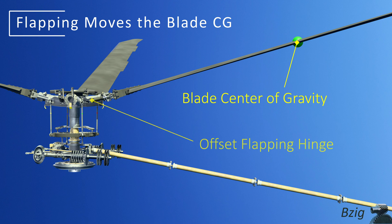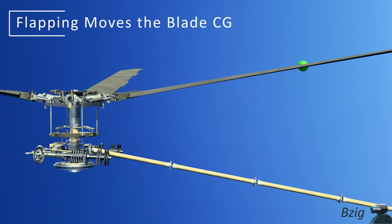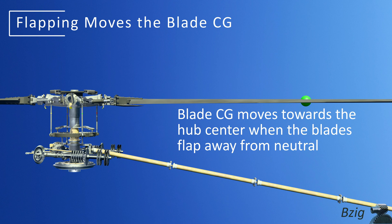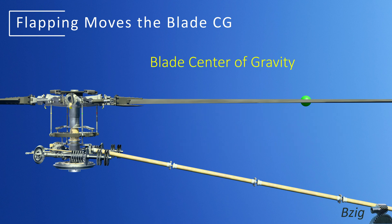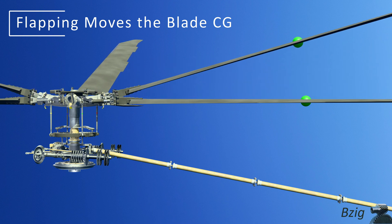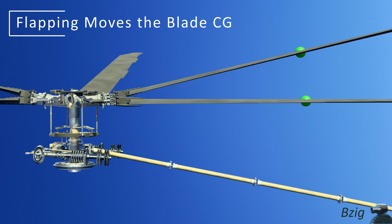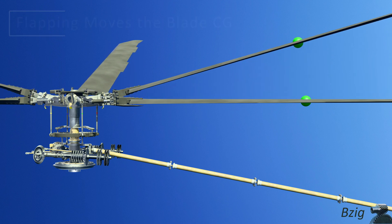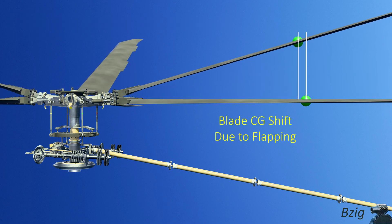But when flapping occurs, the blade's center of gravity moves radially towards and away from the center of rotation. When flapping is neutral, the blade is perpendicular to the mast and the center of gravity is at its farthest point from the center of rotation. And when the blade is at its maximum or minimum flapping, the center of gravity is at its closest point to the center of rotation. This shift in the center of gravity changes the blade's moment of inertia.